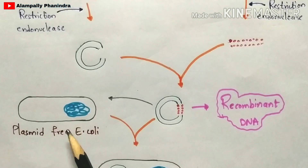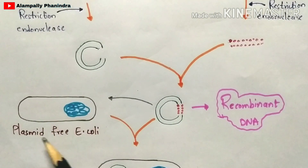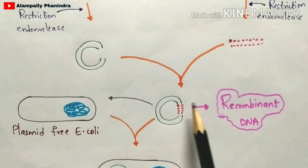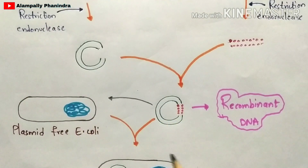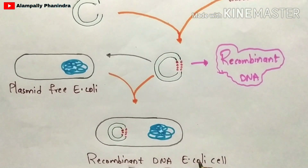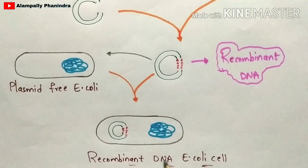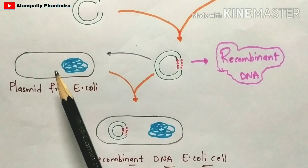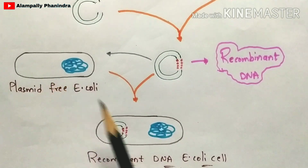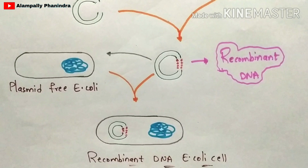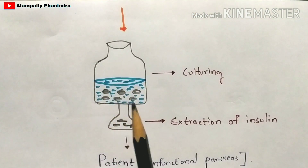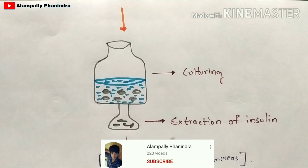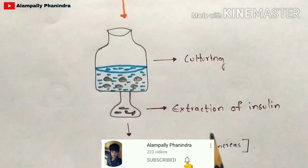Next, you select a plasmid-free E. coli cell — a cell where no plasmid is present. You inject this recombinant DNA into this plasmid-free E. coli, and it forms a recombinant DNA E. coli cell. In place of the plasmid, the recombinant DNA is now present. In the next step, you subculture all of these cells, and once cultured, you extract the insulin from them. That extracted insulin is then injected into patients.